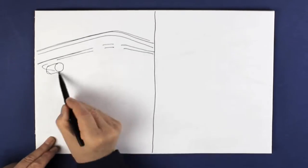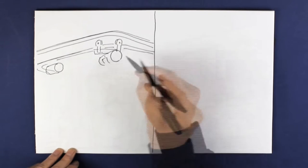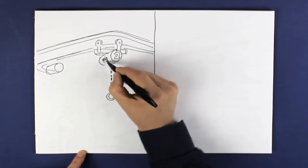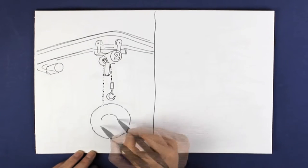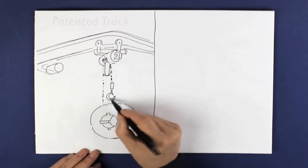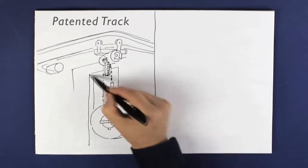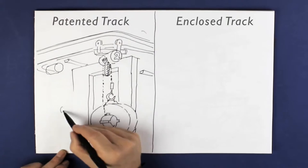Members of the MMA produce two main types of product designed to meet the specific needs of each particular industry or application. They are either a patented track or an enclosed track system.